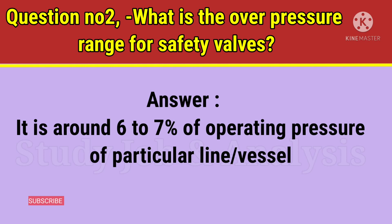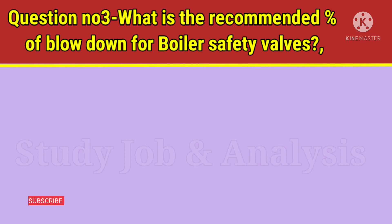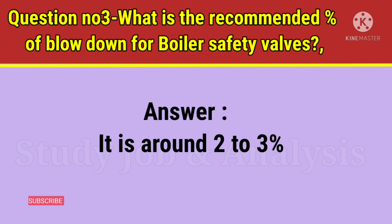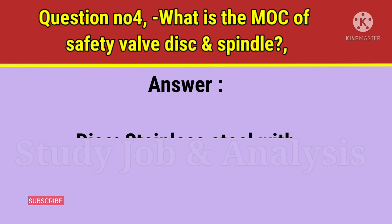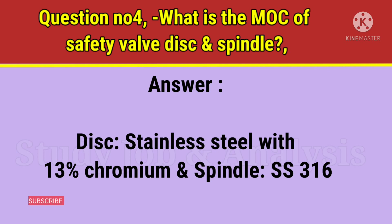Question number 3: What is the recommended percent of blowdown for boiler safety valves? Answer: It is around 2-3%. Question number 4: What is the MOC of safety valve disc and spindle? Answer: Disc — stainless steel with 13% chromium; and spindle — SS-316.